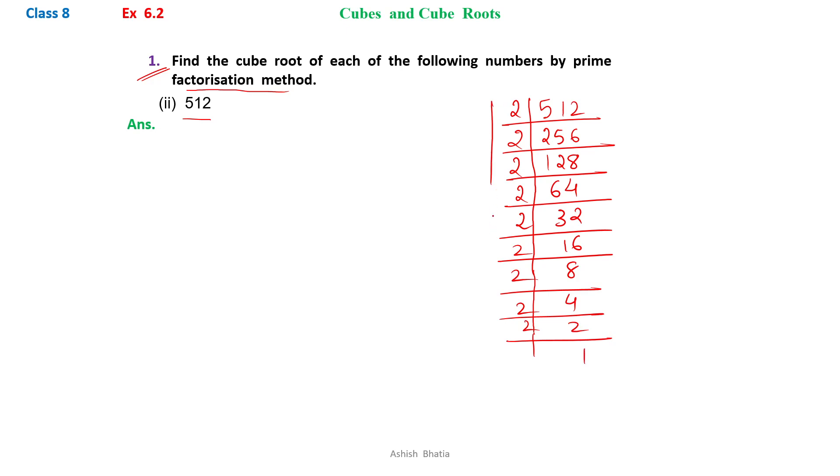Here we see that there are 3 groups of 2, 2, 2. We can write down the cube root of 512 will have 3 groups of 2, 2, 2.